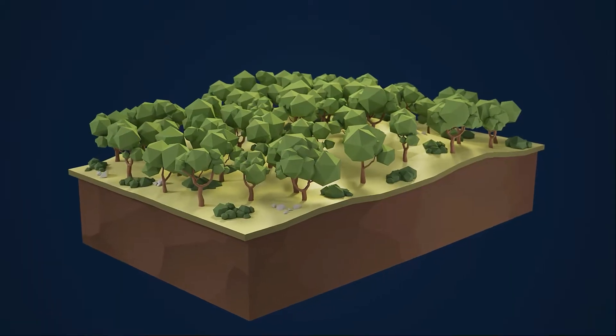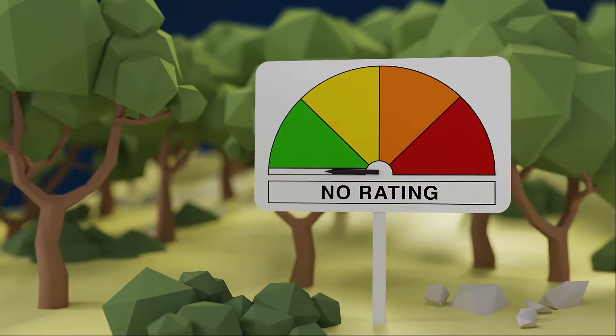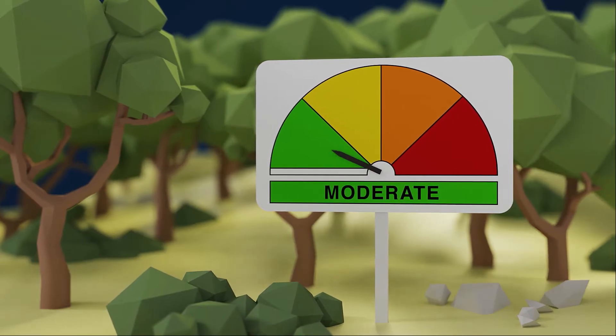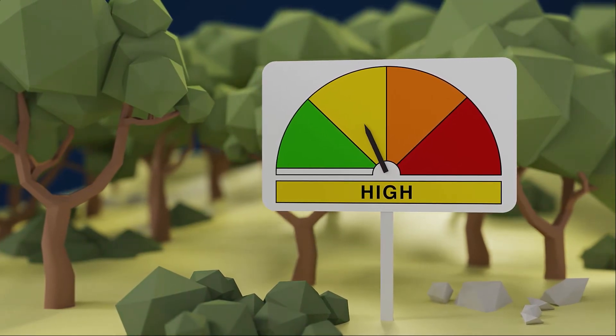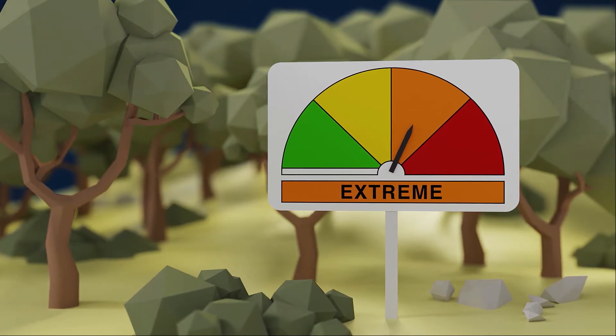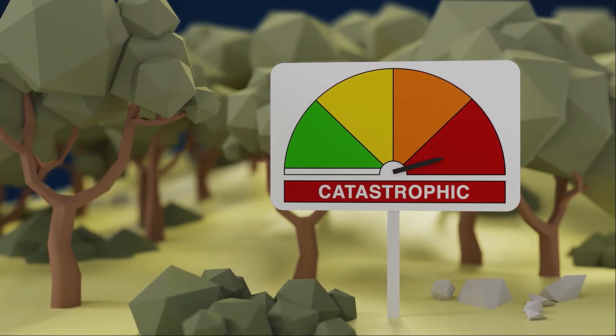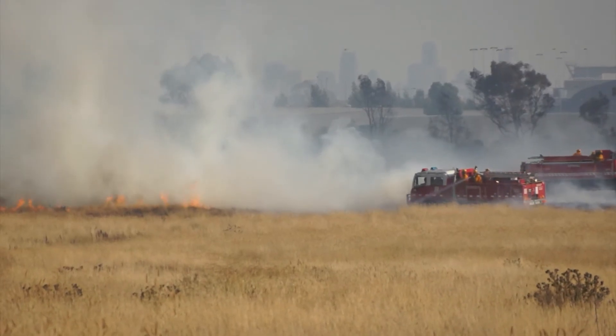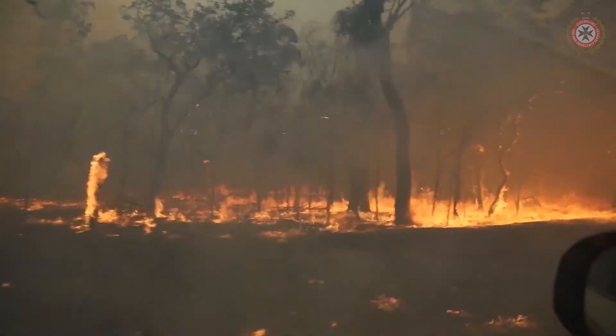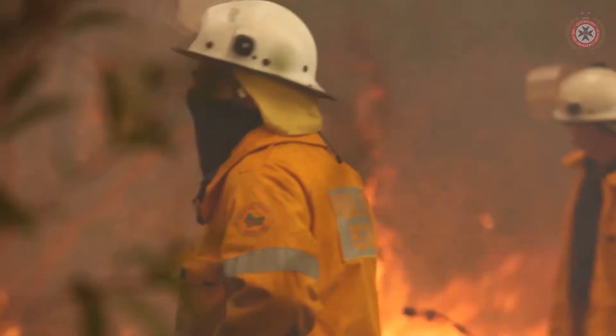The Bureau issues fire weather warnings when forecast weather conditions are likely to be dangerous. We work closely with emergency services around the country to keep the community informed. The Bureau and emergency services use four fire danger ratings to communicate the level of bushfire risk. The higher the rating, the more dangerous the conditions are likely to be, and at higher ratings, any fire that starts will likely be fast moving and difficult to control.